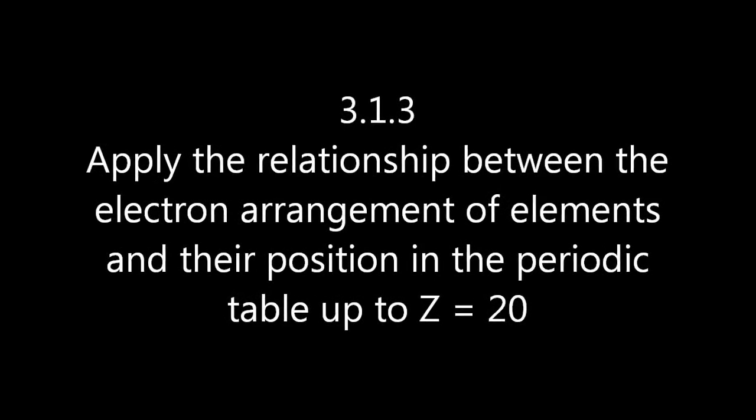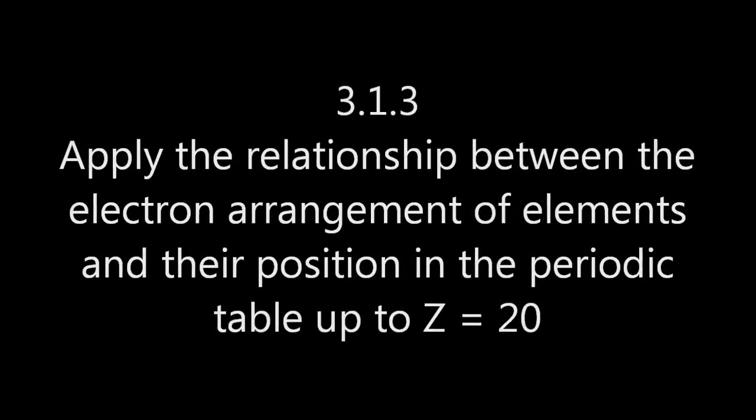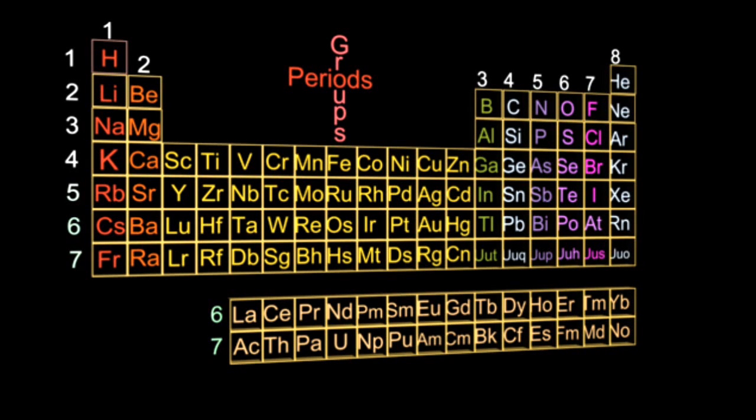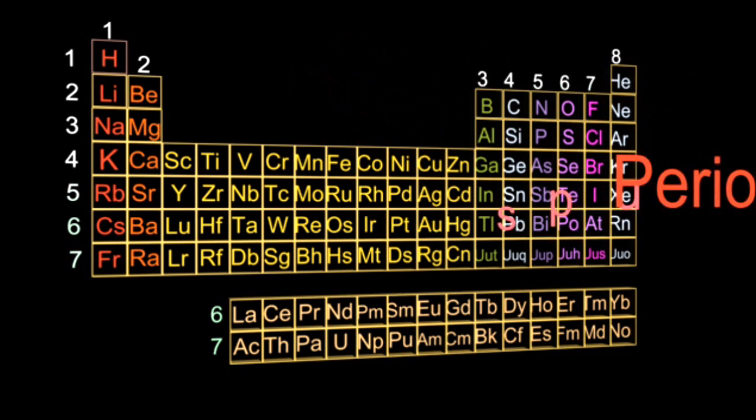Apply the relationship between the electron arrangement of elements and their position. Here's the periodic table, and we just have to go up to calcium, which is spinning there, for SL. For HL, you're going to go beyond it and learn a different way of doing this. But you also need to know the SL way if you're doing HL.